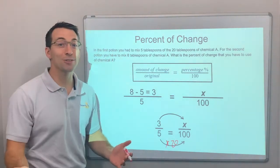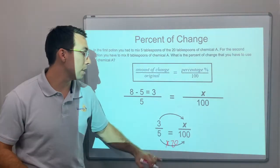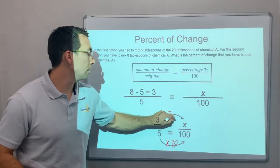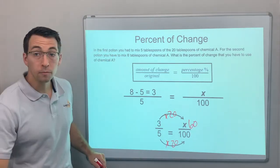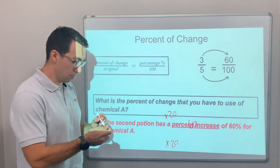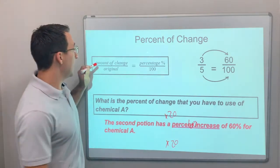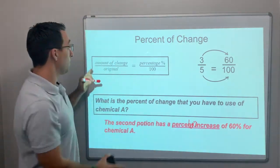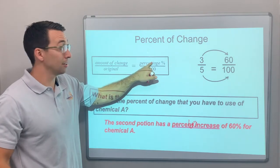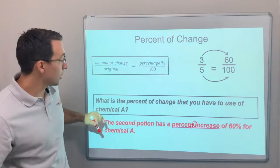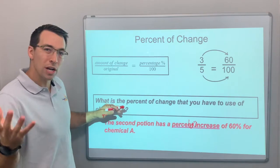5 times 20 is 100, so 3 times 20 is what? It's 60, right? So boom, we have our formula: amount of change over the original equals percentage change over 100.